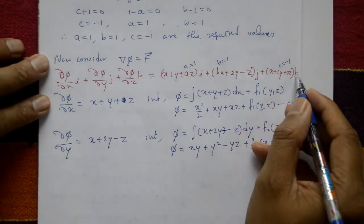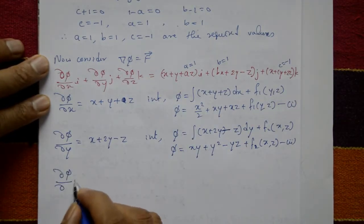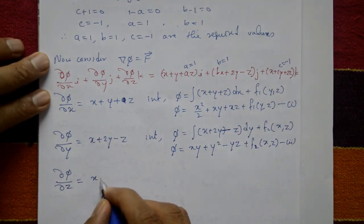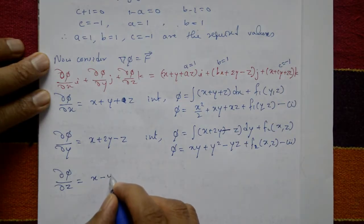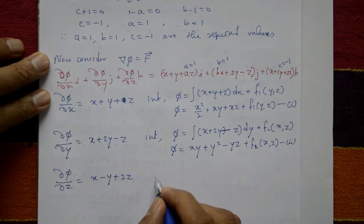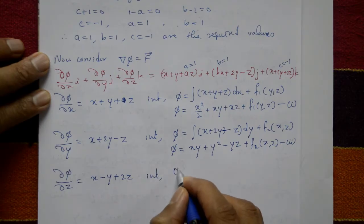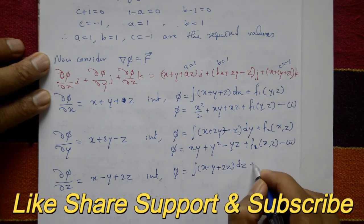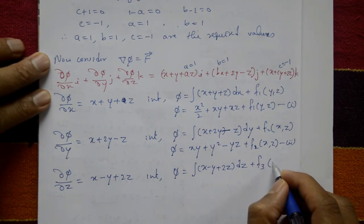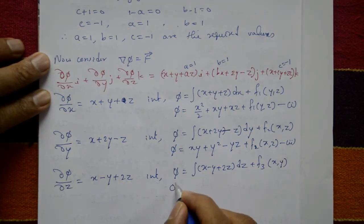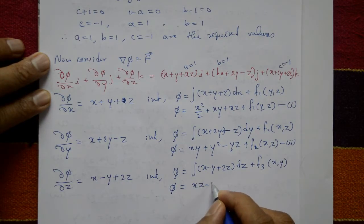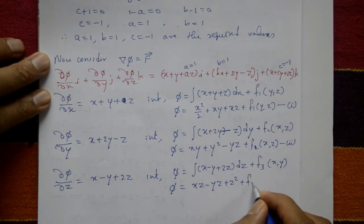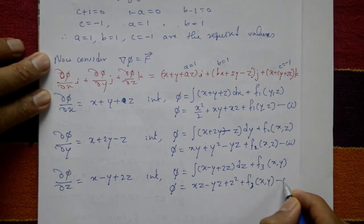Taking the coefficient of k: ∂φ/∂z = x - y + 2z (since c = -1). Integrating with respect to z gives φ = xz - yz + z² + f3(x, y), where f3(x, y) is an arbitrary function of x and y. This is equation number 3.